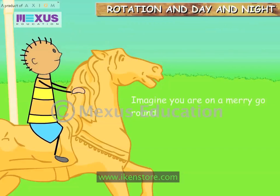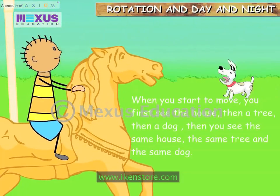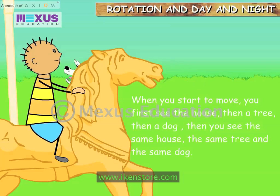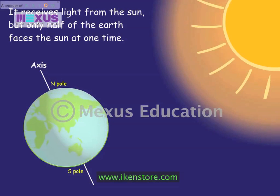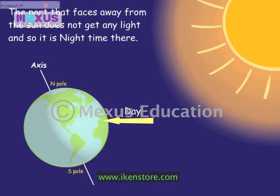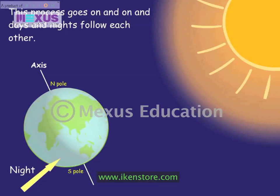Imagine you are on a merry-go-round. When you start to move, you first see the house, then a tree, then a dog, then you see the same house, the same tree and the same dog again. The Earth is like a very big merry-go-round. It receives light from the Sun, but only half of the Earth faces the Sun at one time. It is daytime in this half of the world. The part that faces away from the Sun does not get any light, and so it is nighttime there. This process goes on and on, and days and nights follow each other.